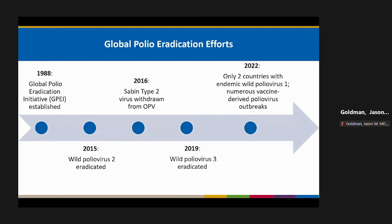Looking globally, in 1988 the Global Polio Eradication Initiative was established. By 2015, wild polio virus type 2 was eradicated. In 2016, the Sabin type 2 portion was withdrawn from oral polio vaccine in a maneuver globally known as 'the switch.' By 2019, wild polio virus type 3 was eradicated. As of 2022, only two countries still have endemic wild-type polio virus — type 1 — however, numerous vaccine-derived polio virus outbreaks are being detected.